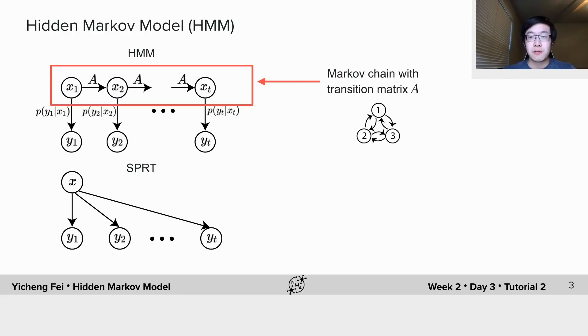And we also believe the neural activities are generated from these discrete dynamics. Then we can try to infer the discrete states from measurements like electric signals or calcium imaging signals. Here, hidden Markov model is a simple yet powerful class of models to describe these latent switching dynamics.